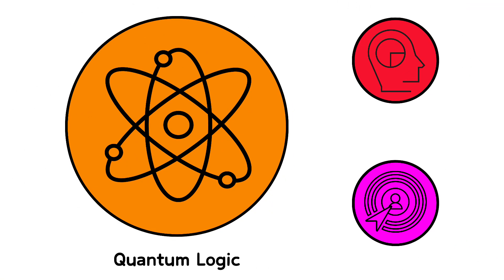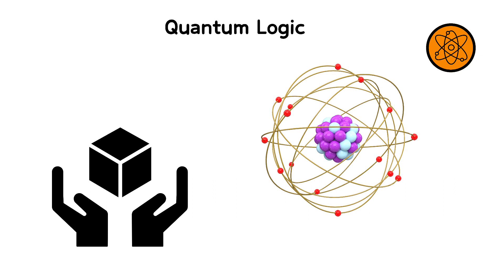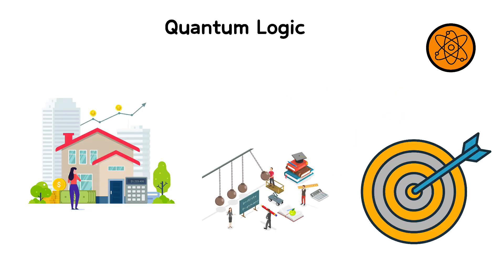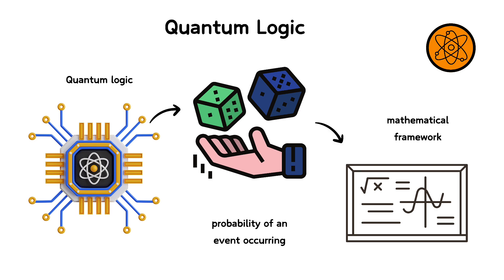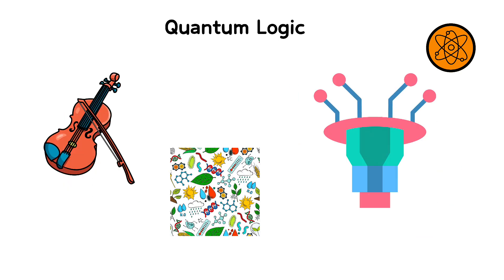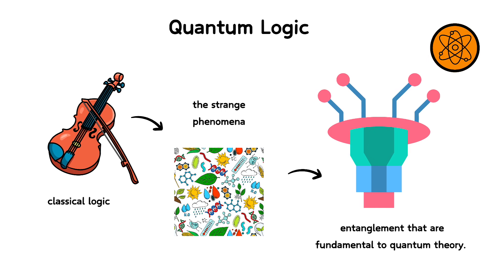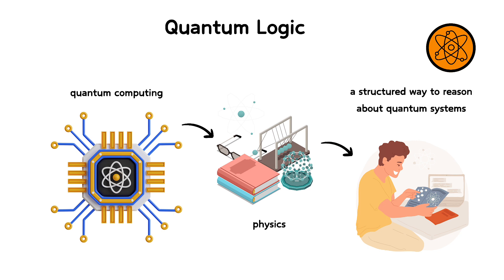Quantum logic modifies classical logic to better handle the peculiar, often counterintuitive nature of quantum mechanics. In quantum physics, certain pairs of properties like position and momentum cannot be simultaneously known to arbitrary precision, Heisenberg's uncertainty principle. Quantum logic, therefore, deals with the probability of an event occurring rather than its certainty. It uses a mathematical framework that differs from classical logic, accommodating the strange phenomena like superposition and entanglement that are fundamental to quantum theory. This logic is essential for researchers in quantum computing and physics as it provides a structured way to reason about quantum systems.